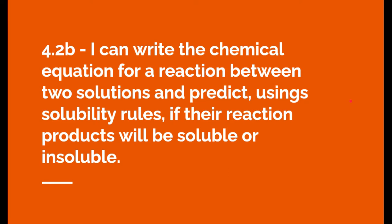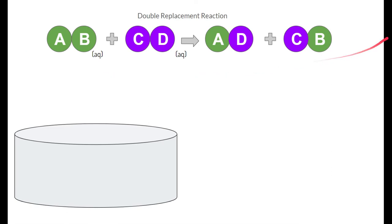This leads us to the next and last learning target. I can write the chemical equation for a reaction between two solutions and predict using solubility rules if the reaction products will be soluble or insoluble. Up here, we have something called the double replacement reaction. Here is one solution's compound, and here's another solution's compound. And this is what happens when you mix them. The arrow shows the reaction happening and they're going to form two new substances.